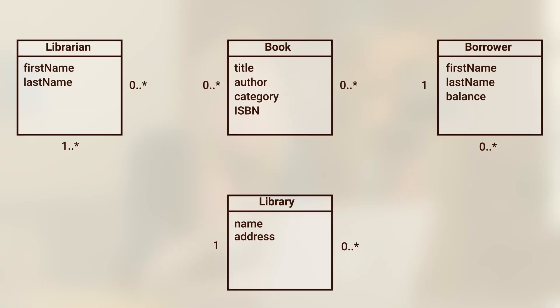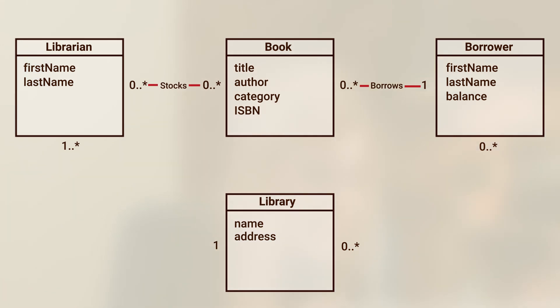Lastly, in our domain model, we can add some verbs. Right now there's a lot of noun-age going on, so let's add some action by talking about what classes actually do with one another. What is the relationship between a book and a borrower? The borrower borrows the book, so I'll add the word 'borrows' on the association line. How does a librarian interact with a book? A librarian stocks a book, so I'll add 'stocks' to that line. What is the association between a librarian and a library? A librarian works at a library, so I'll add 'worksAt' to that association line.